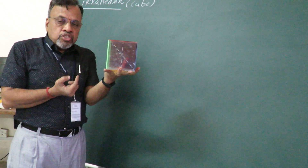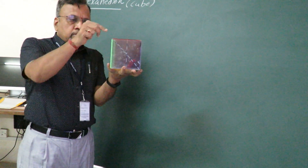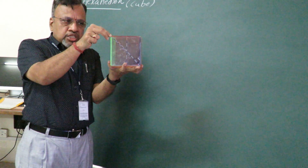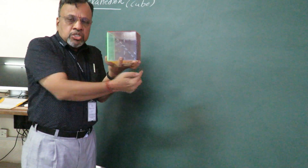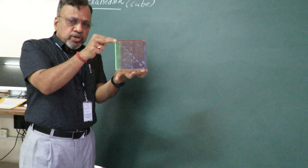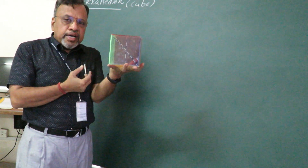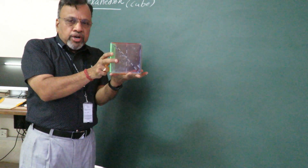A body diagonal — also called a solid diagonal — joins the topmost corner on one end to the bottommost corner on the opposite side, going from the top base to the bottom base on either end. A cube has 4 body diagonals or solid diagonals.